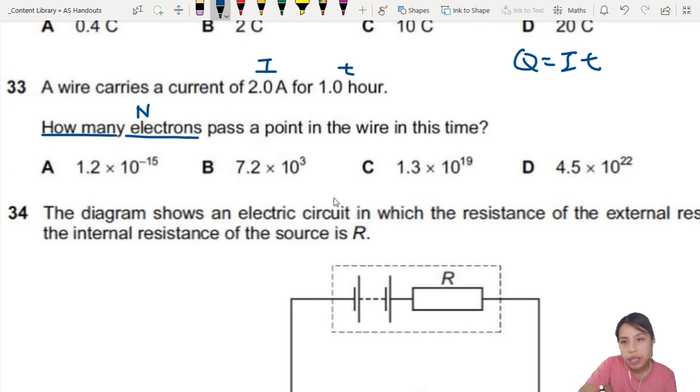Remember Q is total charge, right? So if you've got one electron, then your charge is just E. If you have two electrons, then you have three E. If you have four electrons, then four E. You get what I mean? But here we don't know how many electrons. They are asking us how many electrons.